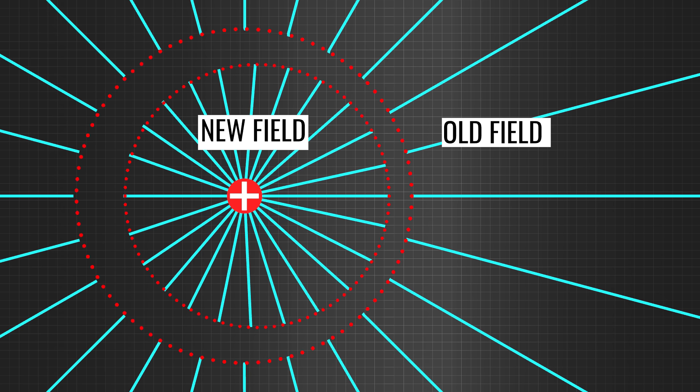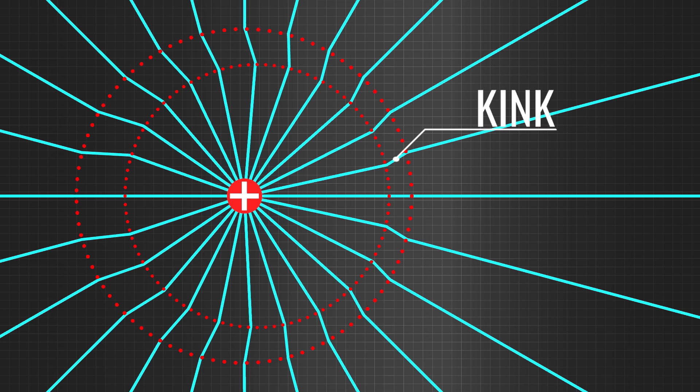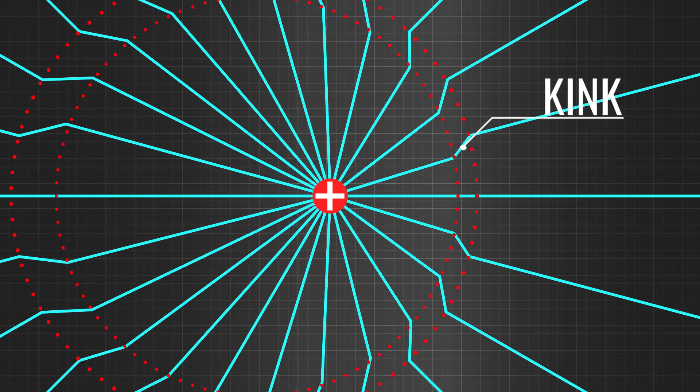Since the electric field cannot break, the field between these distances must transition. This transition field is known as a kink. The kink moves or radiates outwards at the speed of light.